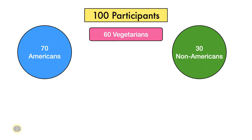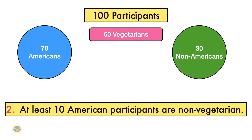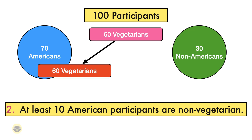Now let's get into the second statement: at least 10 American participants are non-vegetarian. To check this, let's try to maximize the number of American vegetarians. Out of 70 Americans, all vegetarians — that is 60 — can be Americans. So at least 10 Americans will be non-vegetarians. Assuming all 30 non-Americans to be non-vegetarian, at least 10 American participants must be non-vegetarian. So the second statement is also correct. Hence, after analyzing the problem statement carefully, we can conclude that both statements are correct.